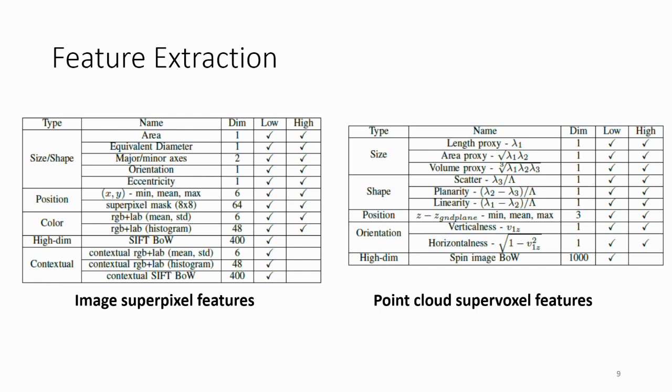At this point, for each of our super pixels or super voxels, we extract different hand-engineered features. And these are the kind of things that were done before the deep learning era. On the image side, we can extract size, shape features, position, color histograms, high-dimensional SIFT descriptors, and some contextual descriptors as well.